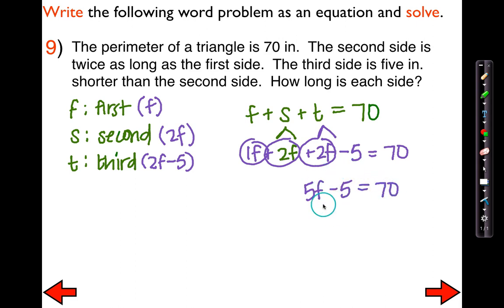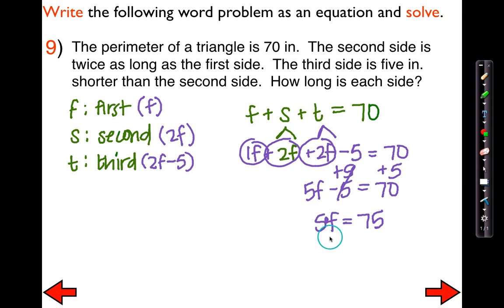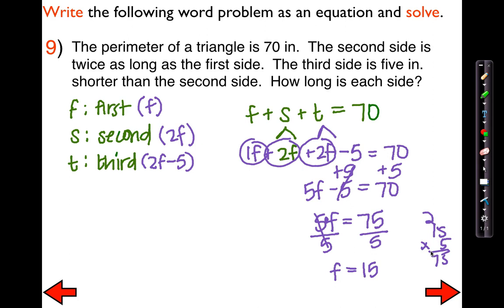We're going to get rid of the constant. The opposite of subtracting 5 is adding 5 to both sides, so we have 5F equals 75. Now get rid of the coefficient — this means 5 times F, so the inverse is to divide both sides by 5, leaving me with F equals 15. What did F stand for? F stood for the first side, so the first side is 15 inches.